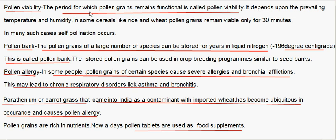Pollen viability. The period for which pollen grains remain functional is called the pollen viability. It depends upon the prevailing temperature and humidity. In some cereals like rice and wheat, pollen grains remain viable only for 30 minutes, and in many such cases self-pollination occurs. Pollen bank — pollen grains of a large number of species can be stored for years in liquid nitrogen at -196 degrees centigrade, and that is called the pollen bank. The stored pollen grains can be used in crop breeding programs, similar to seed banks. In some people, the pollen grains of certain species cause severe allergies and bronchial afflictions, which may lead to chronic respiratory disorders like asthma and bronchitis.